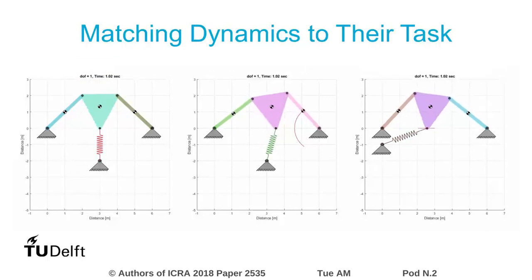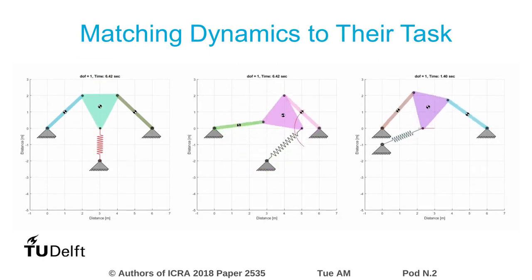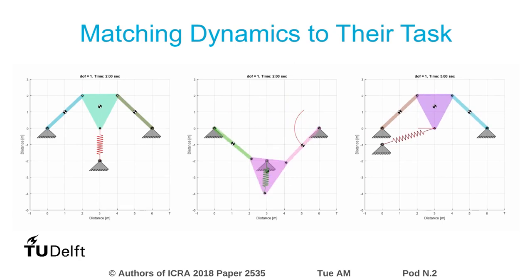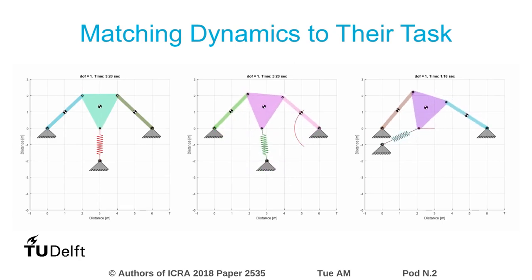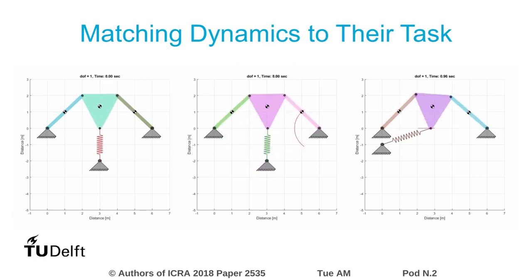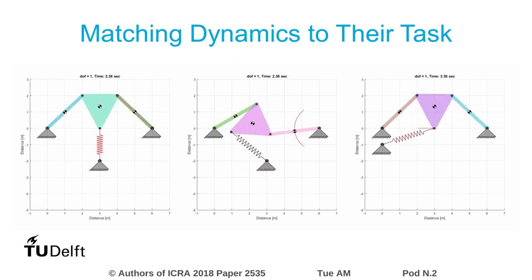Literature shows that robots would perform better when their mechanical structure is specifically designed for its task, for instance by adding spring mechanisms. In this example we see three robot mechanisms that behave quite differently. It shows that spring location and other parameters are essential in getting the desired behavior, which in this case would be to draw a straight line. However, designing such mechanisms is hard and time-consuming, and in this paper we try to solve this automatically with an evolutionary algorithm.